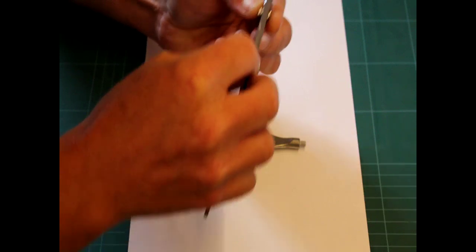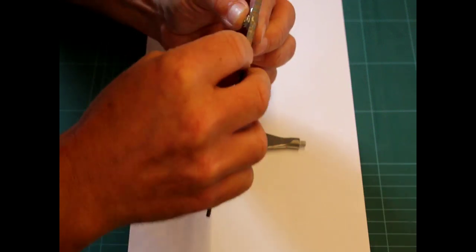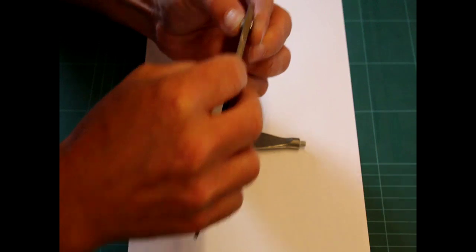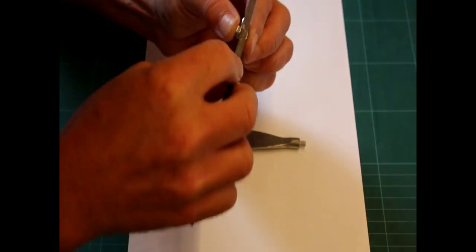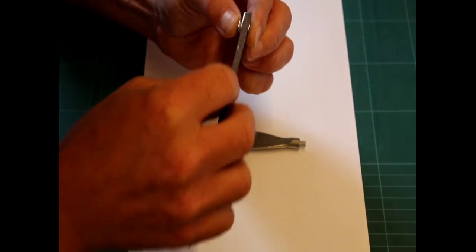Go through all the teeth and get any small casting lines off, because these are all going to be moving and you don't want them locking up.